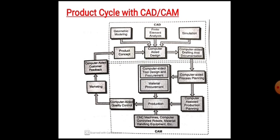Step 2 is computer-aided design. Computer-aided design of the product is carried out using various CAD tools such as geometric modeling, finite element analysis, and simulation. Step 3 is computer-aided drafting and documentation. From the geometric model, detailed two-dimensional drawings of the product and its components are created automatically — this is known as computer-aided drafting.